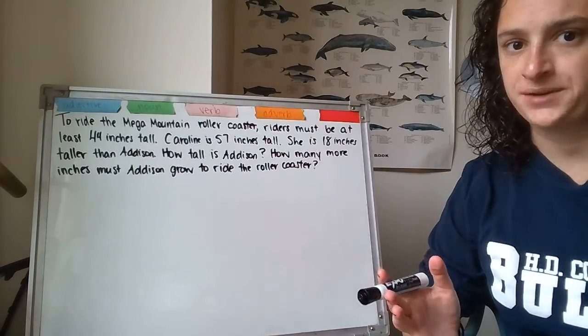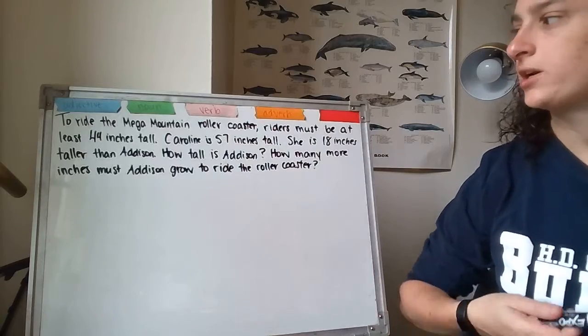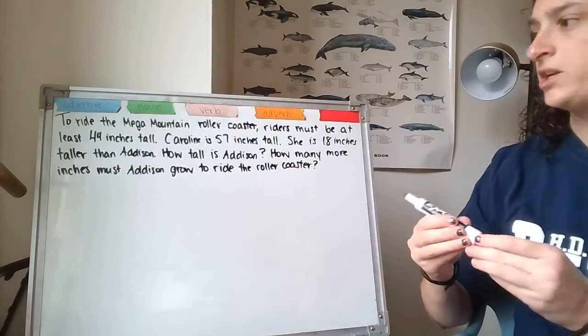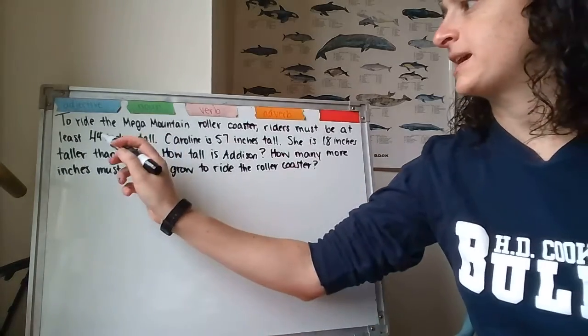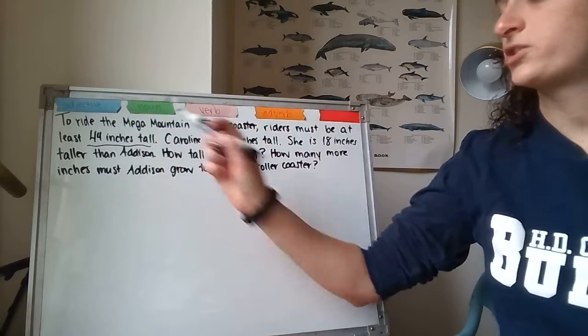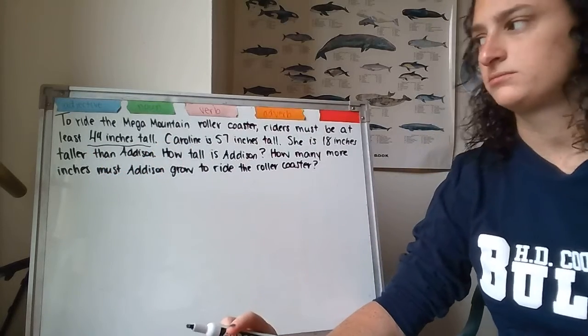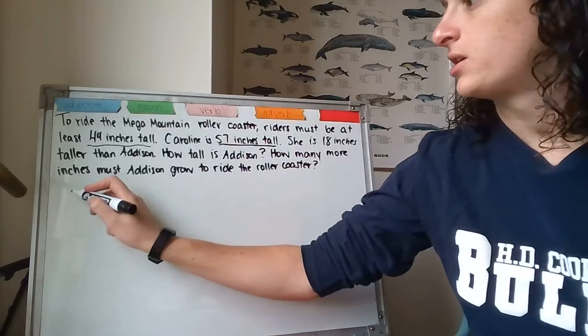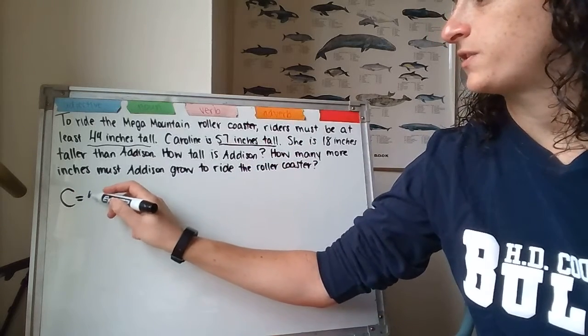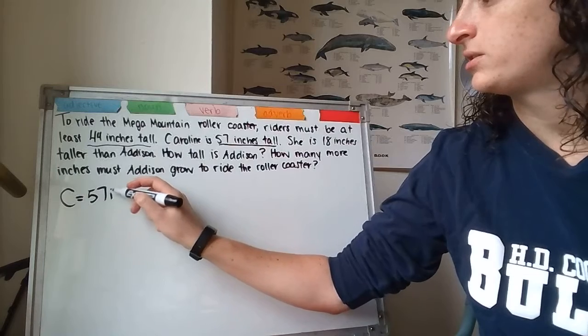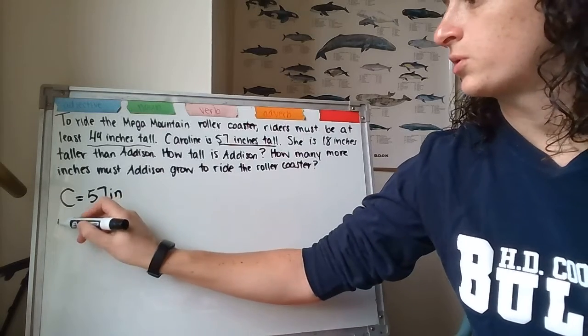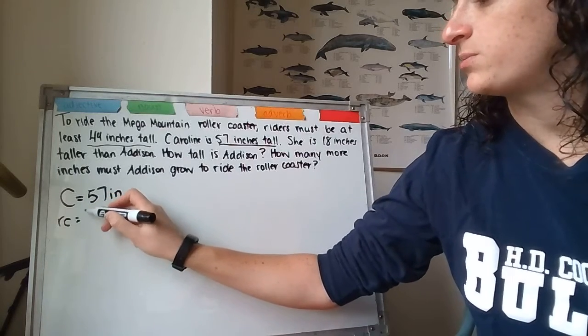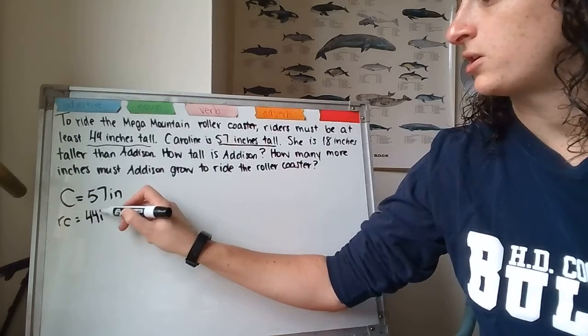So, what do we start with every time? What do we know? We know riders must be at least 44 inches tall for the roller coaster. We know Caroline is 57 inches tall. So Caroline is 57 inches tall.